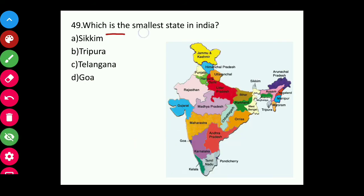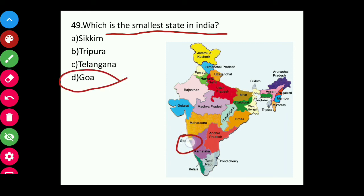Question forty-nine: Which is the smallest state in India? The answer is Goa. It is a very small but very populated place.